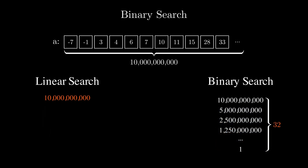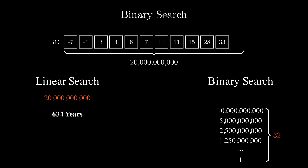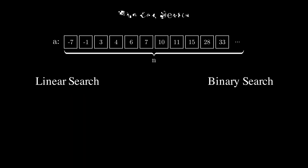Now, what if we double the array? What if we add another 10 billion elements making it 20 billion? In that case, the linear search would take us 634 years to complete, while the binary search would just add a single operation — just one second — making it 33 seconds in total. So having n elements in the initial array, what would be the time complexities for the linear and binary search algorithms?